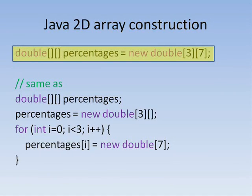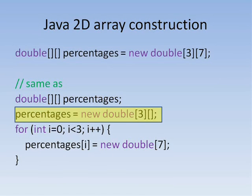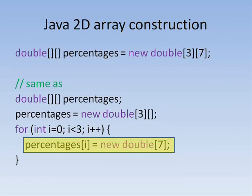Although we can write this with a single constructor, what is actually happening is that we are first making an array of size three, which will hold pointers to the rows, and then we are filling that array by calling a constructor to make an array of seven doubles three times, once for each row.